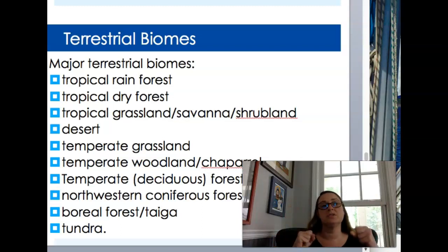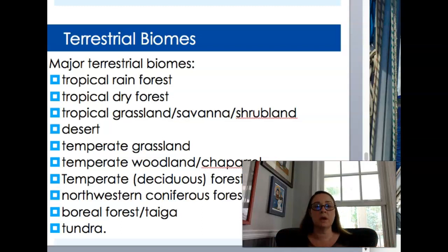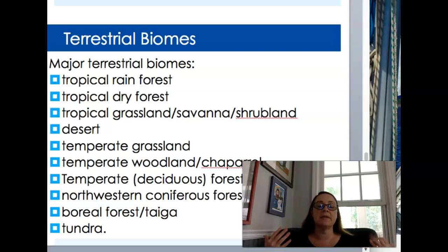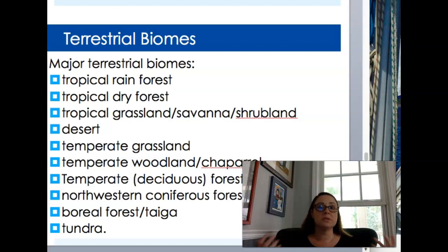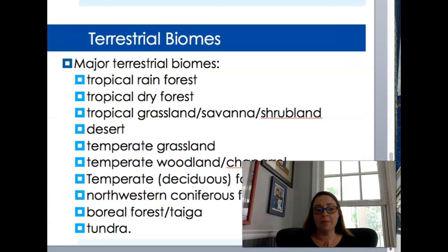The boreal forest, also called the taiga — you've probably heard it called that — borders the tundra. The taiga covers a lot of Alaska. And then you have the tundra, which is basically a frozen desert — very low precipitation, very cold, not a whole lot of plant life. It can't support a whole lot of life because it's a pretty extreme environment.